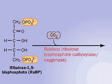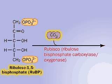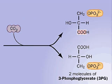Carbon dioxide from the atmosphere combines with RUBP in a reaction catalyzed by rubisco, or ribulose bisphosphate carboxylase oxygenase, making two molecules of 3PG, 3-phosphoglycerate, a 3-carbon acid.